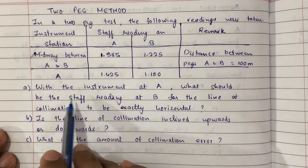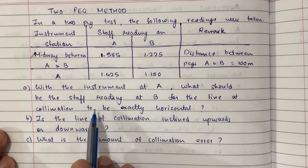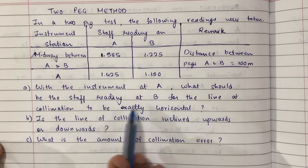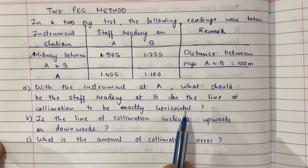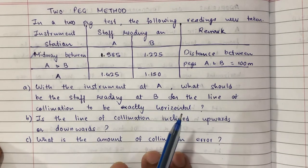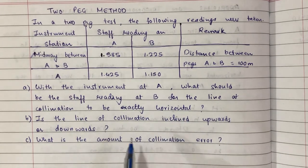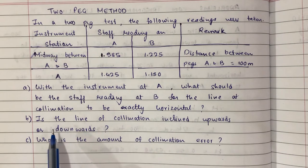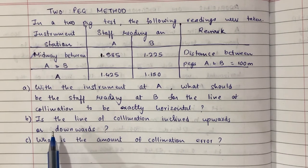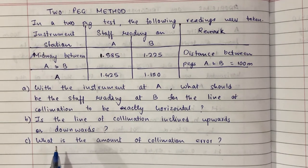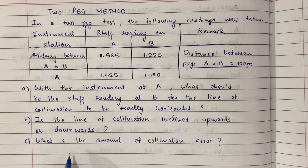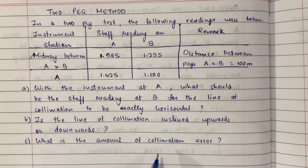With the instrument at A, what should be the staff reading at B for the line of collimation to be exactly horizontal? Second, is the line of collimation inclined upwards or downwards? And third, what is the amount of collimation error?